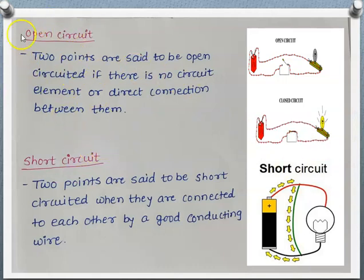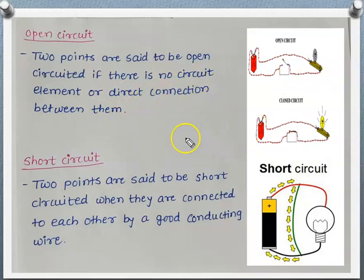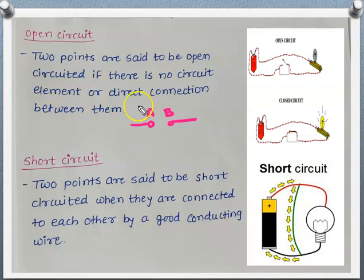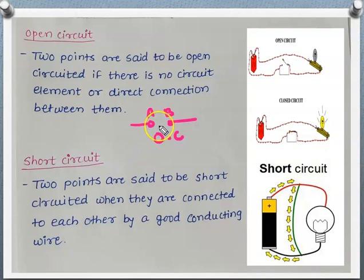Now let's see what is meant by open circuit and short circuit. Two points are said to be open-circuited if there are no circuit elements or direct connection between them. Suppose we have two points A and B in a circuit — if there is no element and no direct connection between them, that condition is called an open circuit.